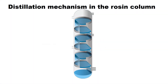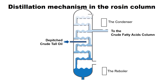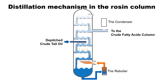This diagram shows the rosin column. The dehydrated and de-pitched crude tall oil is fed into the centre part of the column. The liquid at the bottom of the column is heated up with the reboiler and returned to the distillation system as high-temperature vapour. The low boiling point components then evaporate on each sieve tray, resulting in vapour-liquid contact on the upper trays.